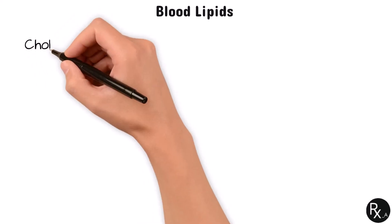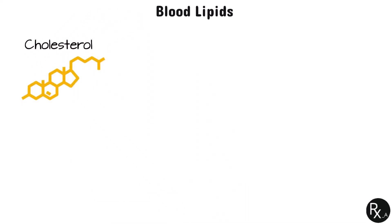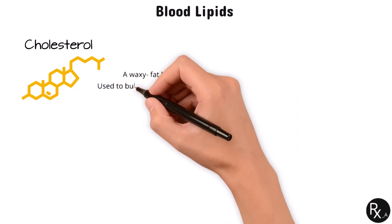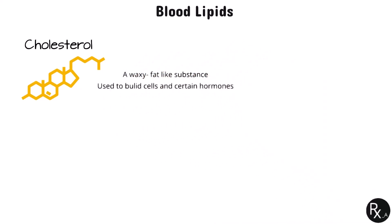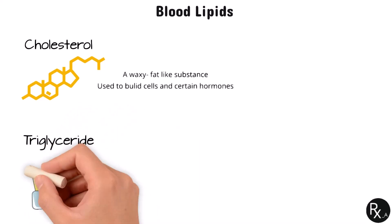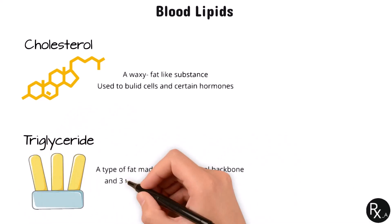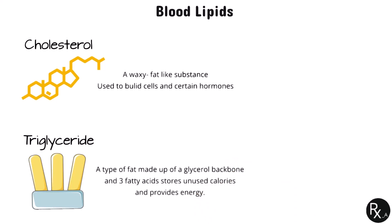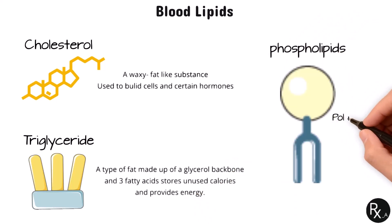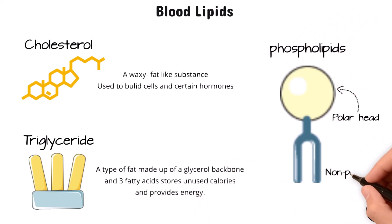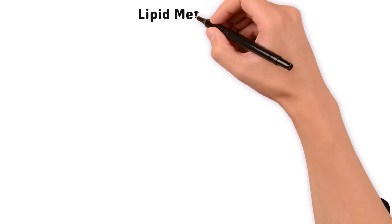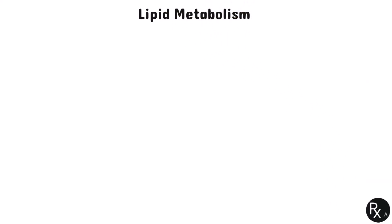Cholesterol is essential for cell membrane integrity and the generation of bile acid and steroid hormones. Glycerol and three fatty acids combine to form triglycerides, which are a significant energy source that the body may store. Finally, phospholipids function as an emulsifier and represent a significant portion of all cell membranes. These lipids need to be carried throughout the body in a protein capsule known as a lipoprotein, since they are insoluble in blood plasma.